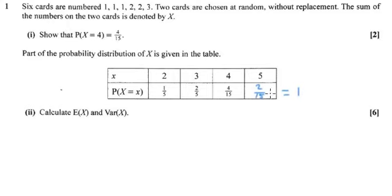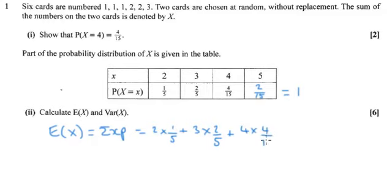To work out the expectation E(X), that is the sum of xp, the sum of the x values times their probabilities. So that's going to equal two lots of one fifth, plus three lots of two fifths, four lots of four fifteenths, and five lots of two fifteenths.